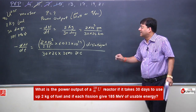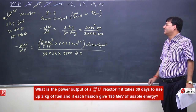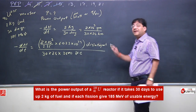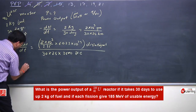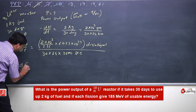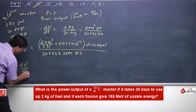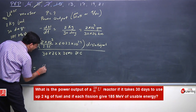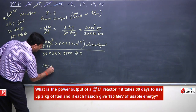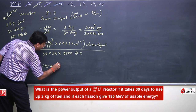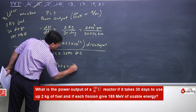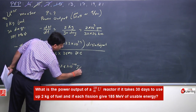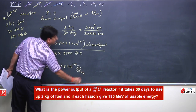This is the rate of disintegration per second. At this rate disintegration is occurring. Now, for each disintegration, 185 MeV energy is released. Energy released per disintegration, delta E, is 185 into 10 to the power 6 (to convert mega) into 1.6 into 10 to the power minus 19 joules per disintegration.